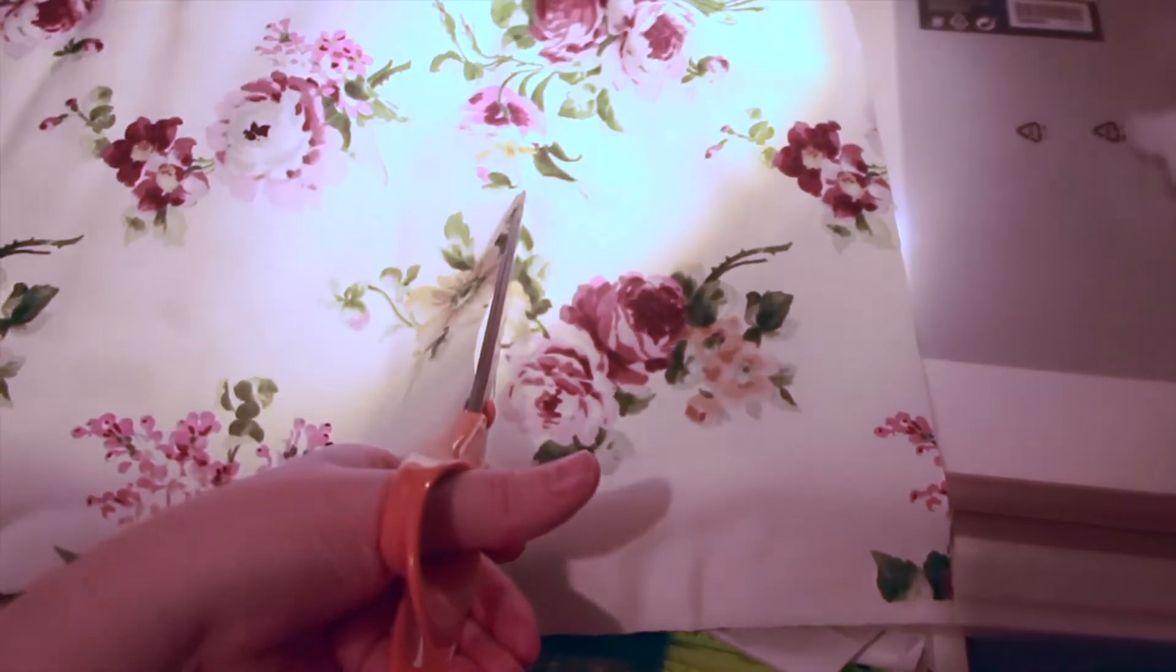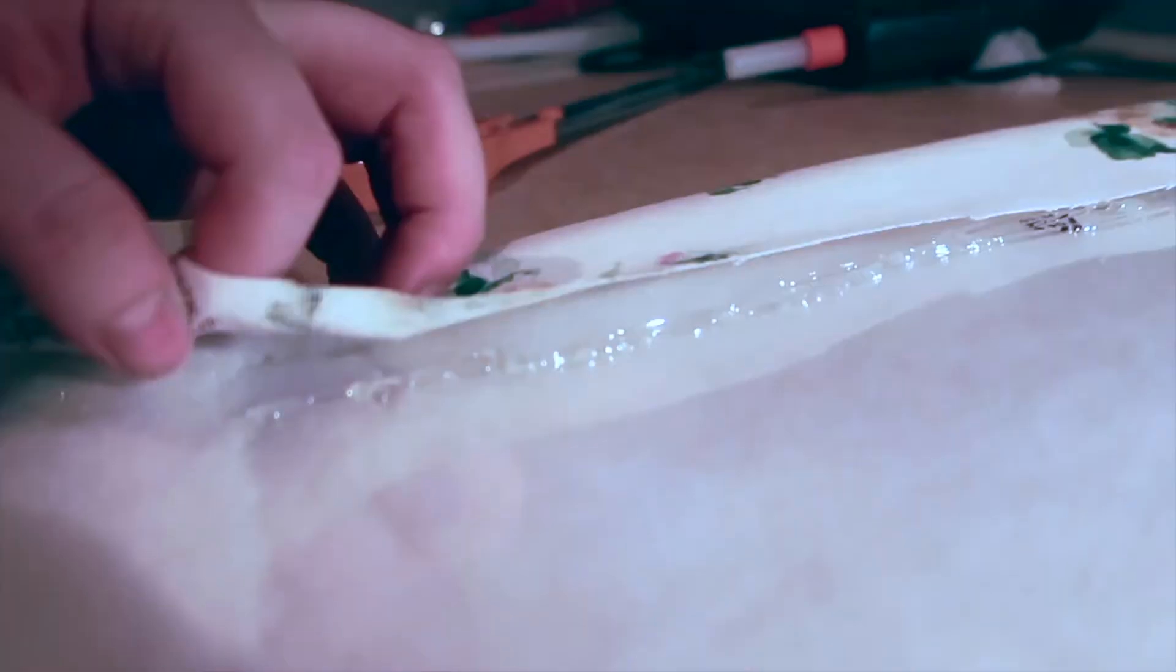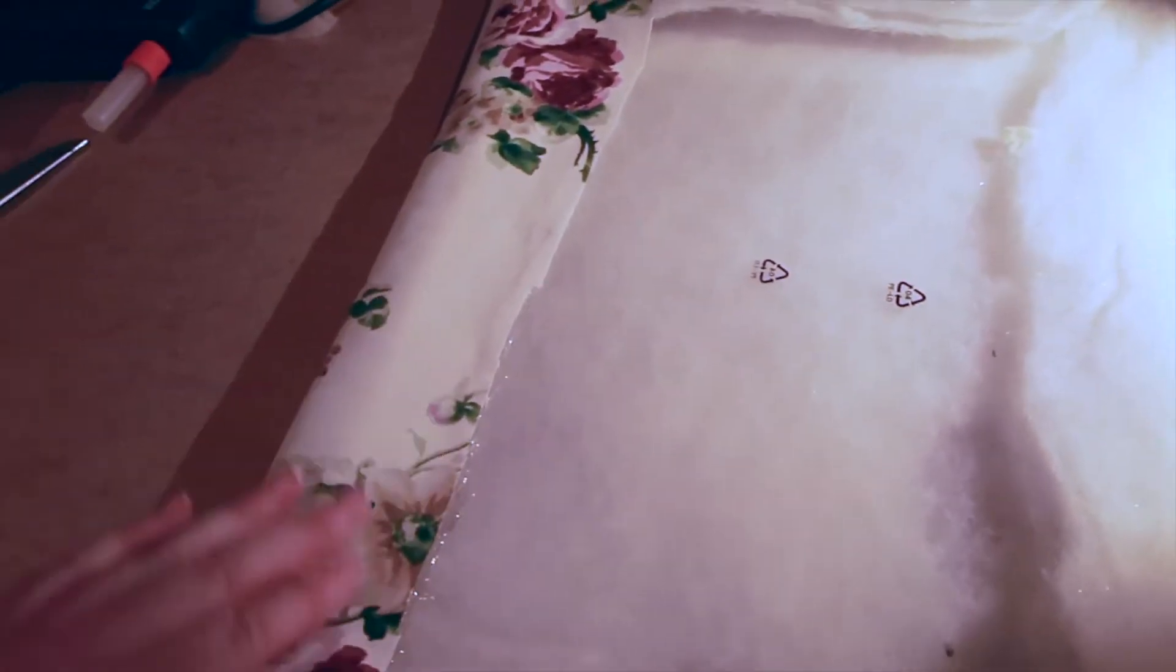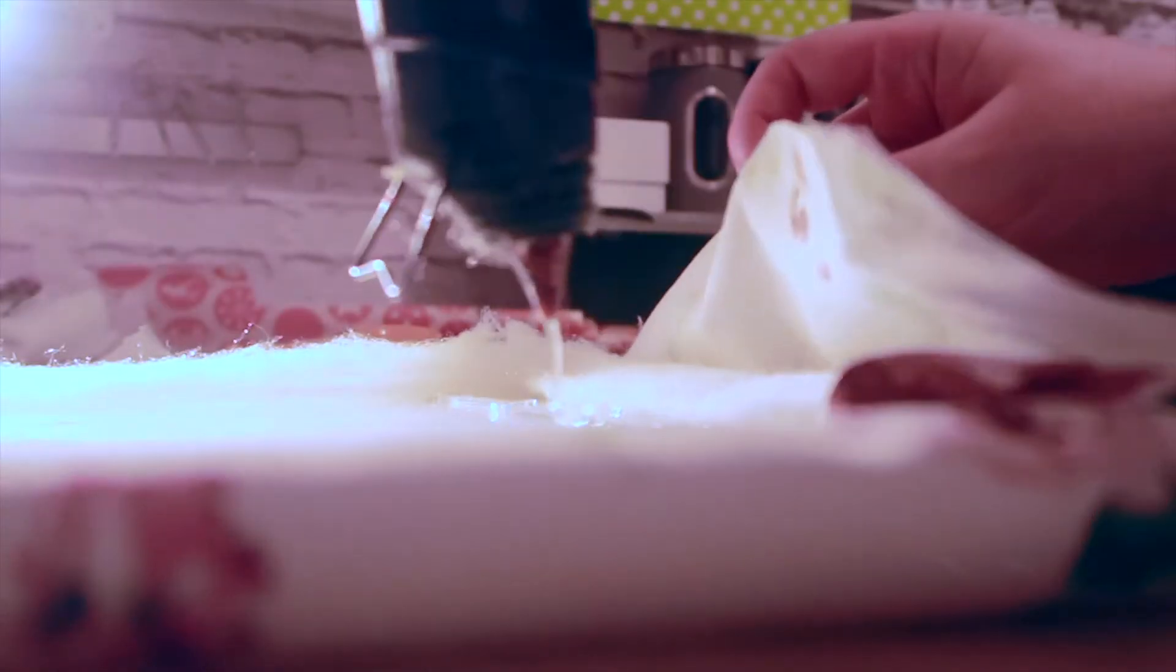I am now going to cut out the actual material that I am going to put over the foam. Again I am just going to fold it over and stick it down. You can do it all together at once if you want, so you can just add the foam and the material all at once and stick it down. I just wanted to do it in separate parts just to make sure that it was really secure.